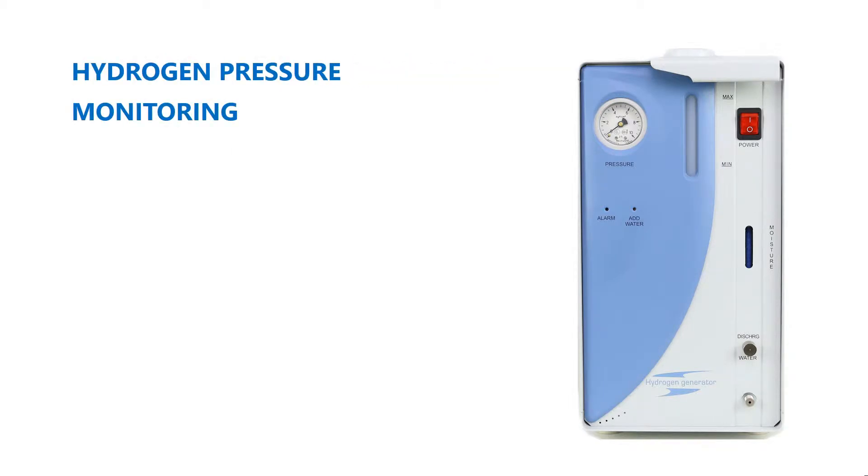Hydrogen pressure monitoring: The pressure gauge in the hydrogen generator is not designed for measurements, therefore the use of pressure gauges with special units is allowed. This table shows the ranges of hydrogen pressure for different generator models.